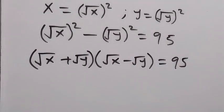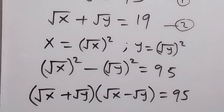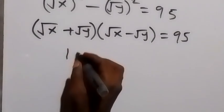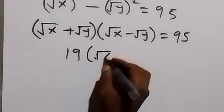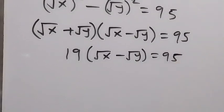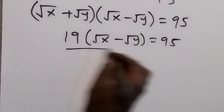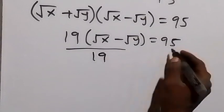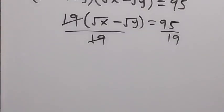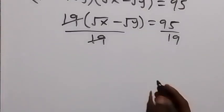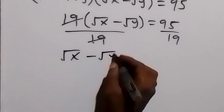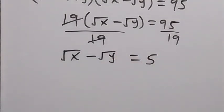And then from here, we have root x plus root y from equation 2, that is 19. So let's replace that as 19. We now have 19 multiplied by root x minus root y equals to 95. The next step: let's divide both sides by 19. So 19 cancels, and 95 divided by 19 is the same thing as 5. So we now have root x minus root y equals to 5.